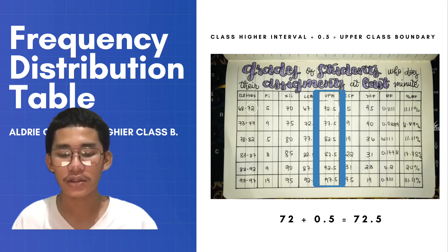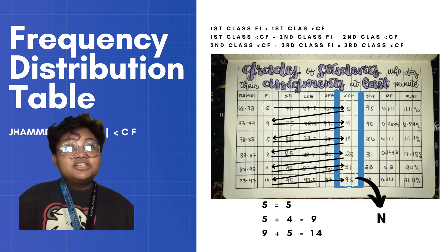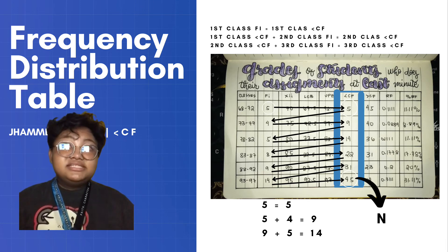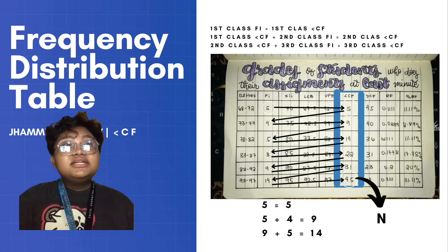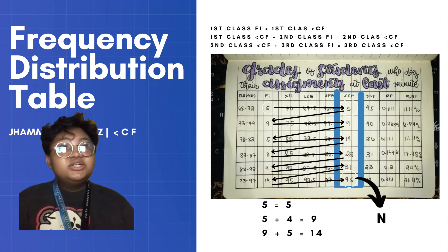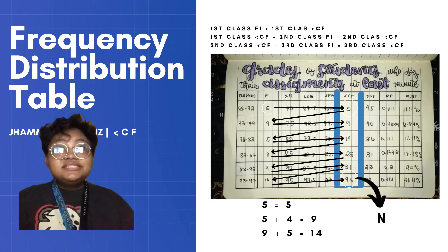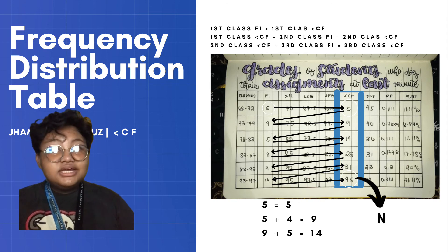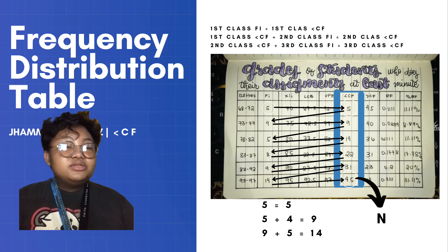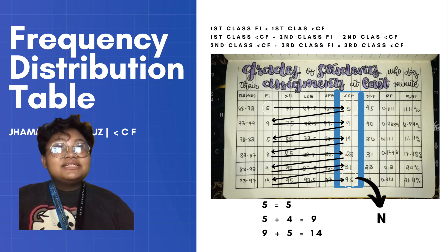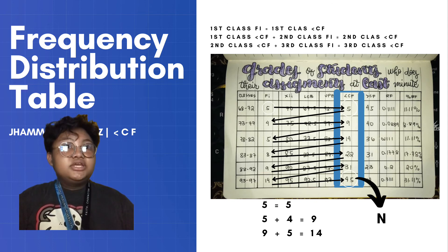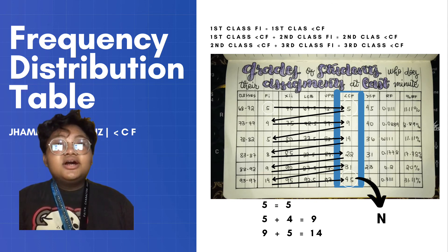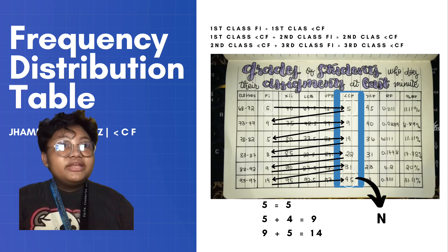After we know how to gather class boundaries, we must proceed to getting the less than cumulative frequency. In getting the less than cumulative frequency, we cite the frequency itself. This process involves adding one frequency to the previous less than cumulative frequency. We copy the first frequency to become our first less than cumulative frequency, then the first less than cumulative frequency is added to the second class frequency to become the second less than cumulative frequency, and so on.